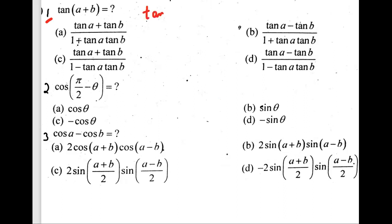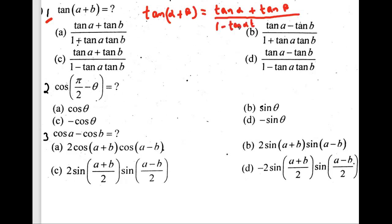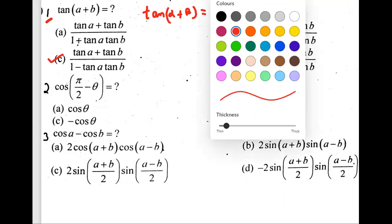So tan(α + β) equals tan α plus tan β divided by 1 minus tan α tan β. In the identities we use α and β, but in the question you will see a and b — we can replace variables. We have a plus sign in the numerator and a minus sign in the denominator, so it is option C.